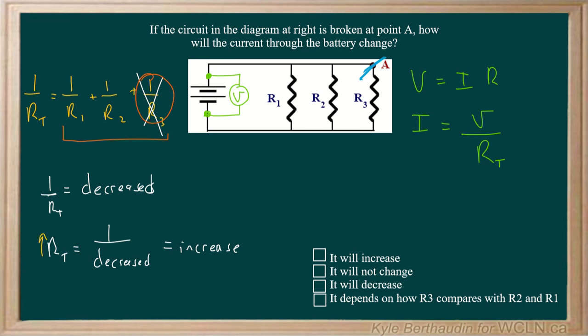So, coming back to our equation describing the current across the battery, if RT increases, that's going to make I, the current across the battery, smaller. It will decrease.